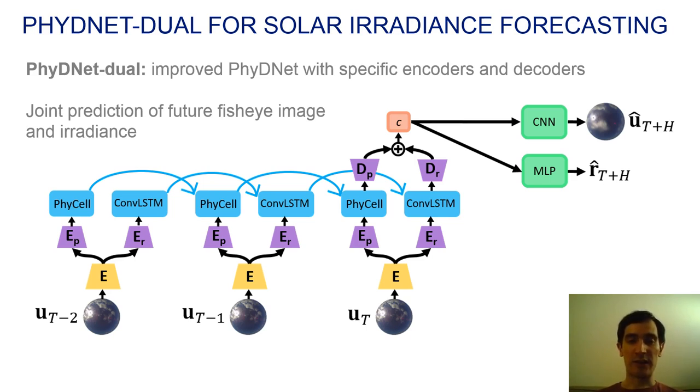This context vector summarizes all the previous sequence of images. We then plug a CNN to predict the 5-minute ahead future fisheye image and an MLP for the future irradiance value. We obtain better results when predicting jointly the future image and the irradiance than the irradiance only, due to the improved supervision.